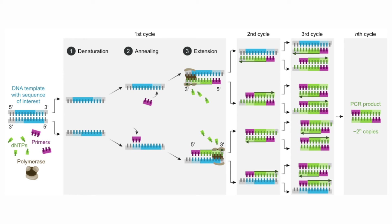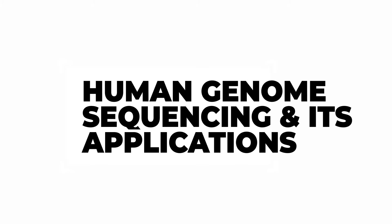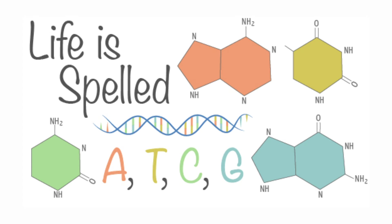Coming back to the discussion — the question is whether it's possible to recreate an entire human being. Maybe we can delve into that later. What we could also elaborate on is that there are 3.2 billion base pairs of DNA. Could you elaborate on the potential implications and applications of mastering this language — understanding these four base pairs A, G, C, and T?